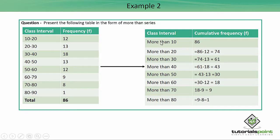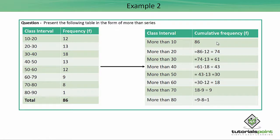So more than 10, the cumulative frequency is 86. For more than 20, take 86 minus the frequency of the class interval 10 to 20, which gives 74. You apply the same method for all class intervals — subtracting the frequency of each preceding interval — to complete the table in the form of a more-than series.